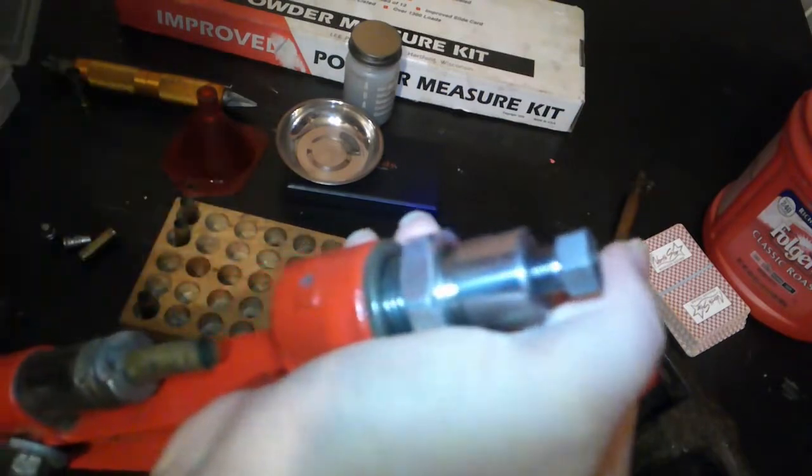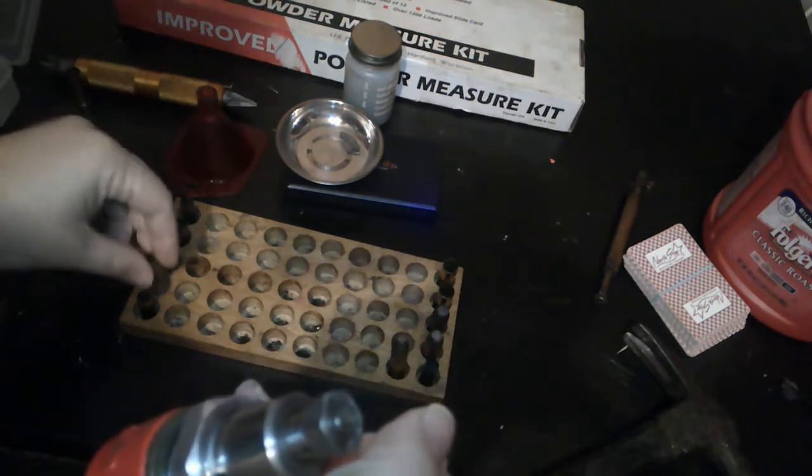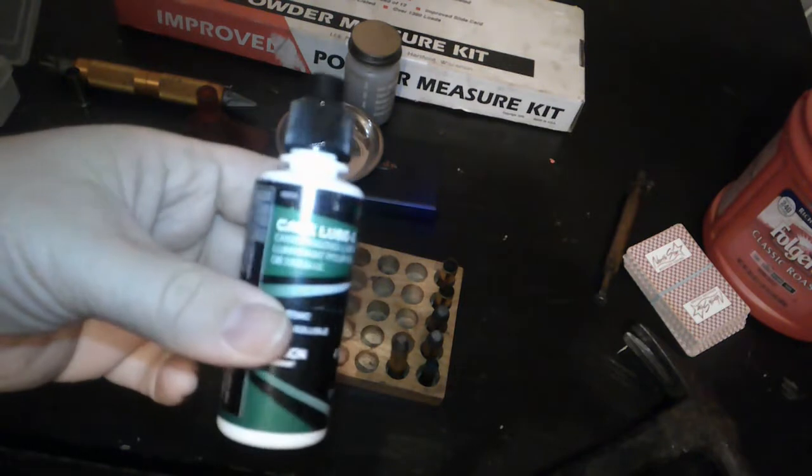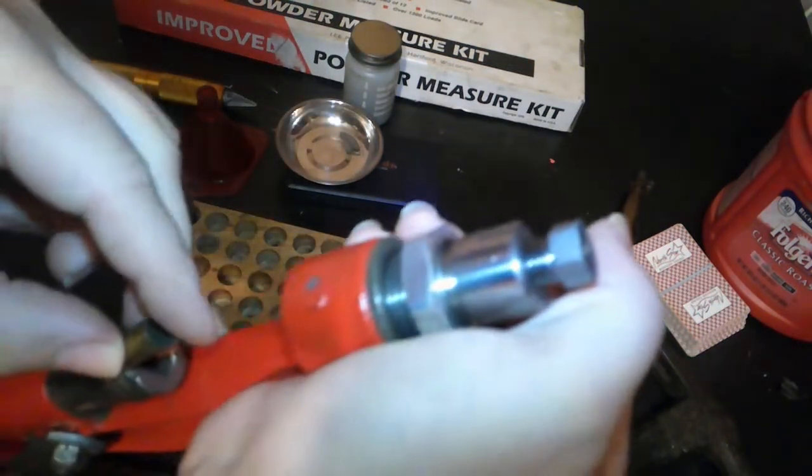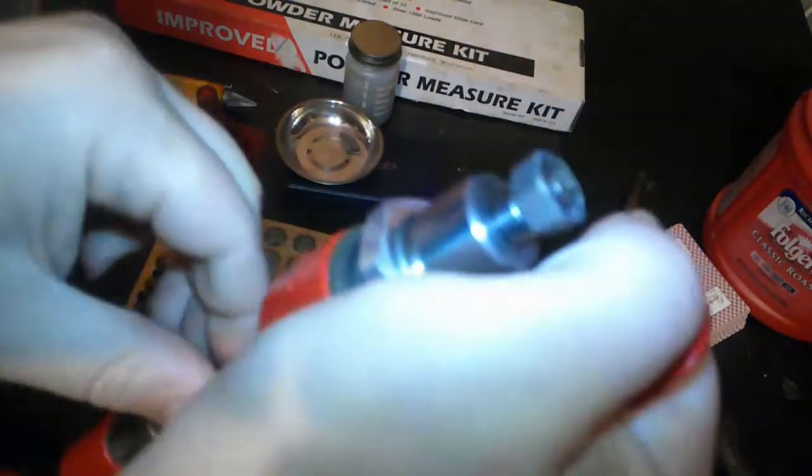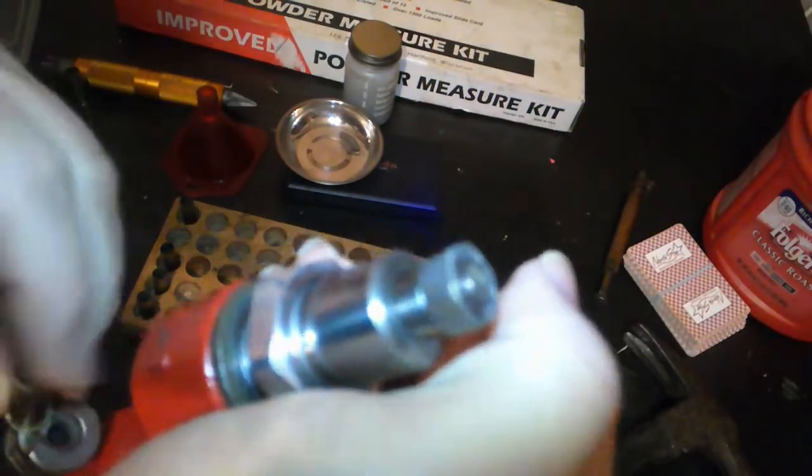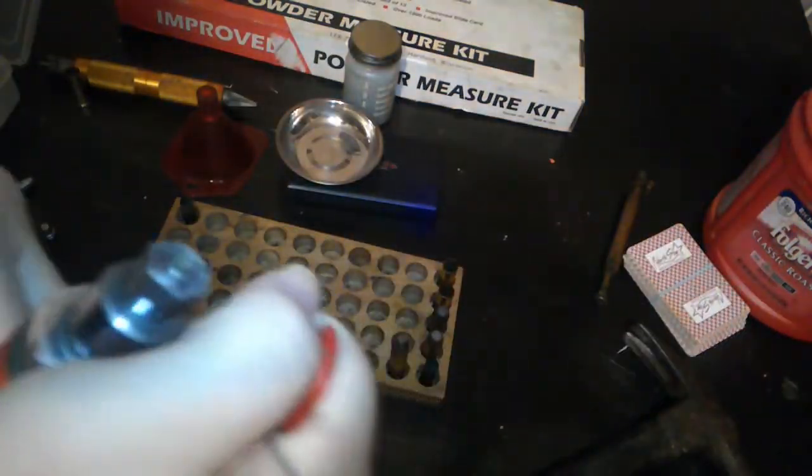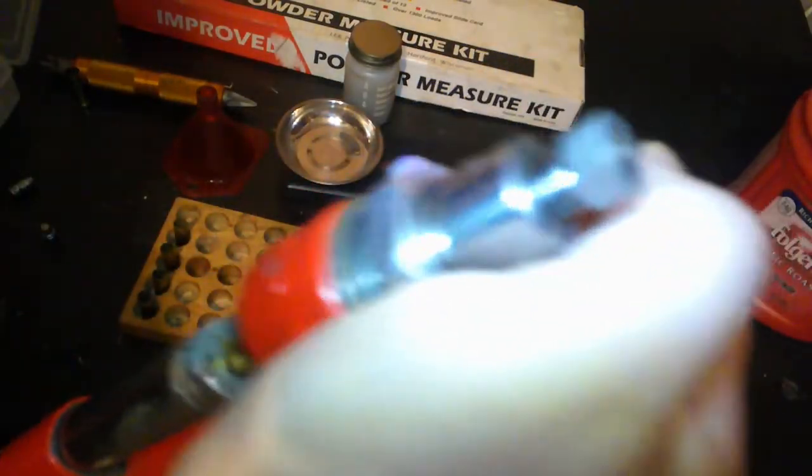Let's do another. If you're using just steel dies, you will have to use something like this, RCBS number two case lube. These are 38 special that we're reloading.